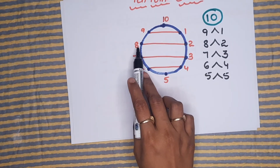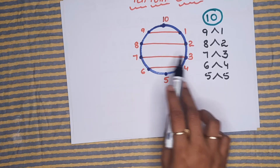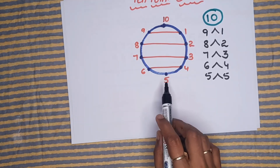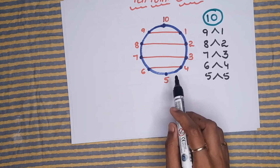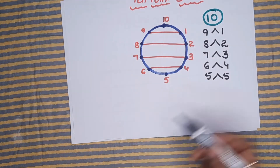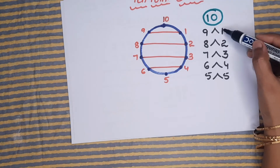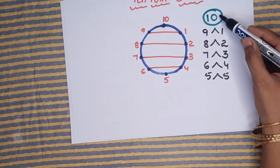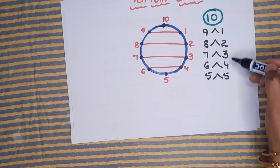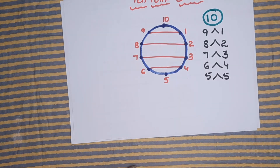9 and 1, 8 and 2, 7 and 3, 6 and 4 — if you add these pairs you get 10. And 5 plus 5 also gives 10. So we are making these pairs based on their sum being 10.